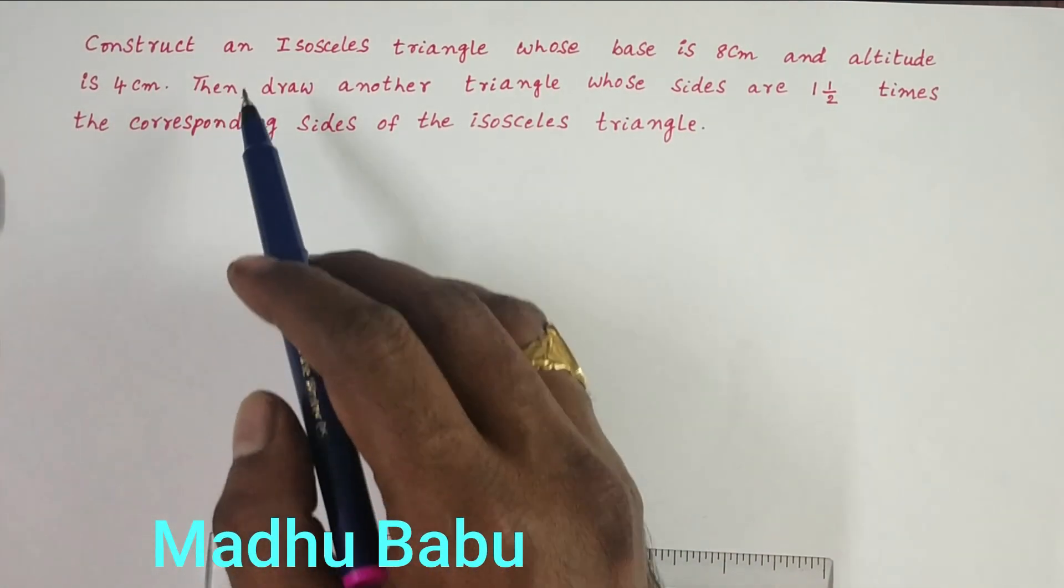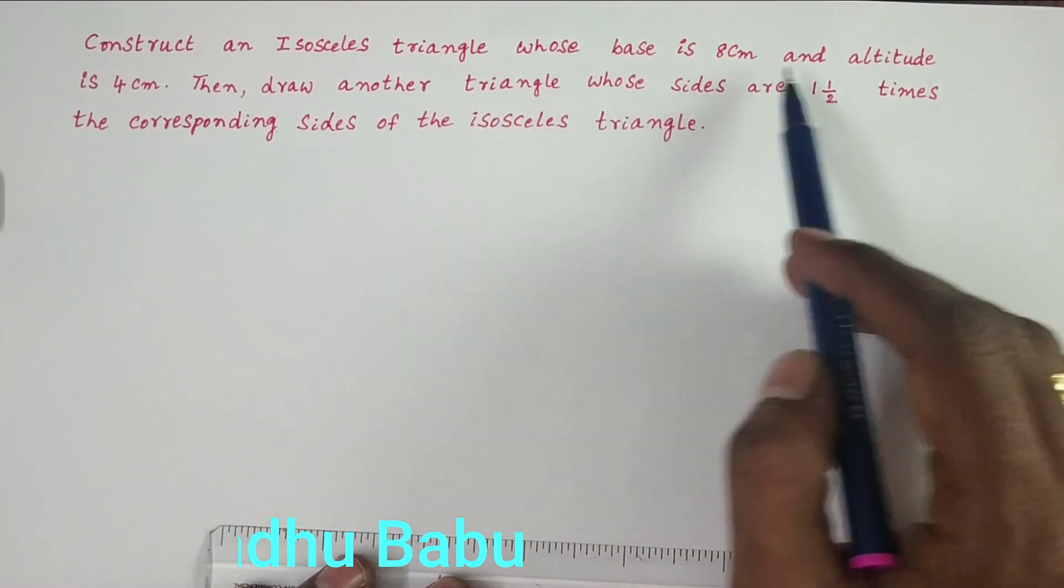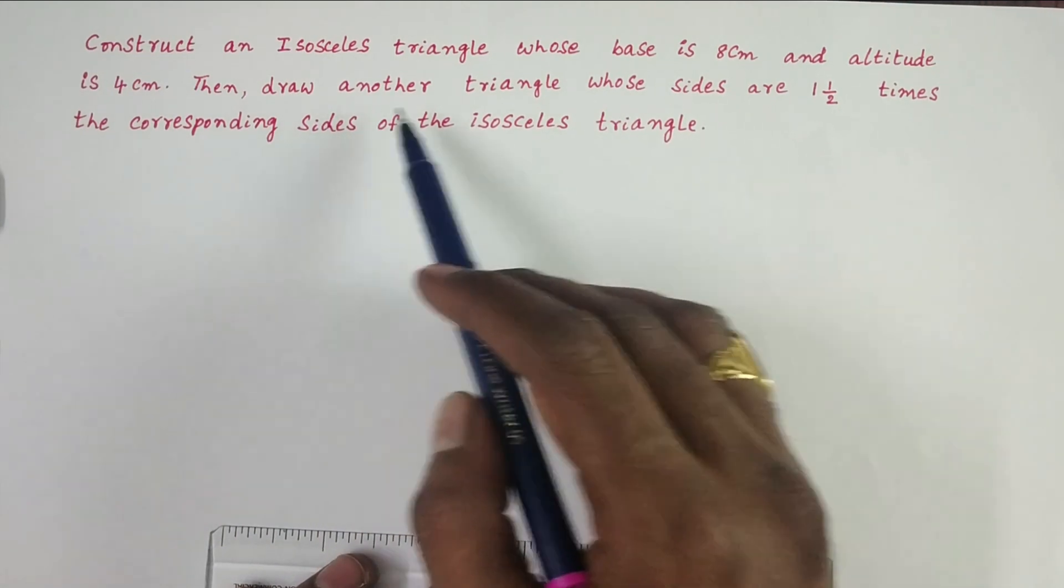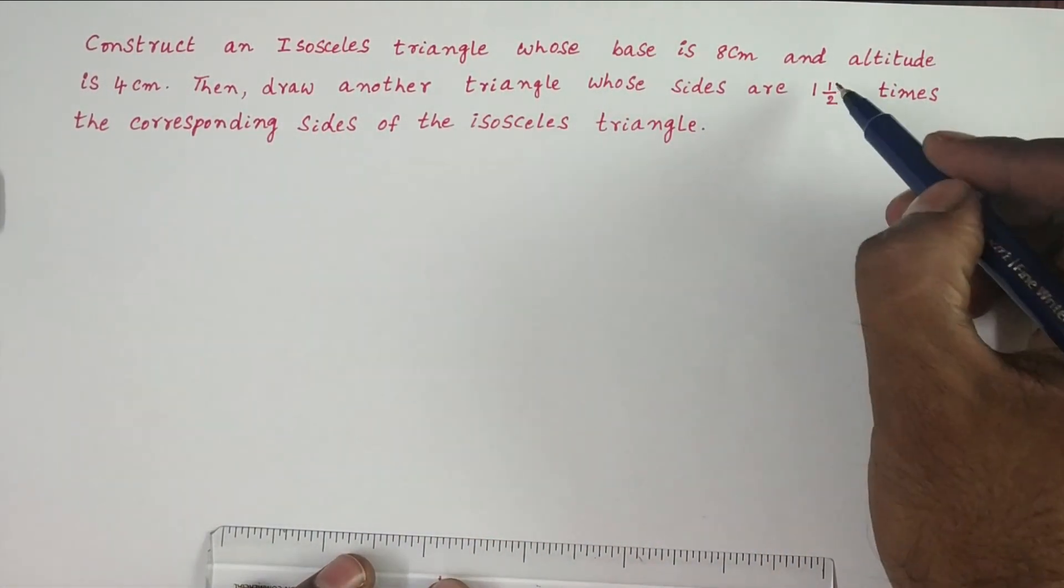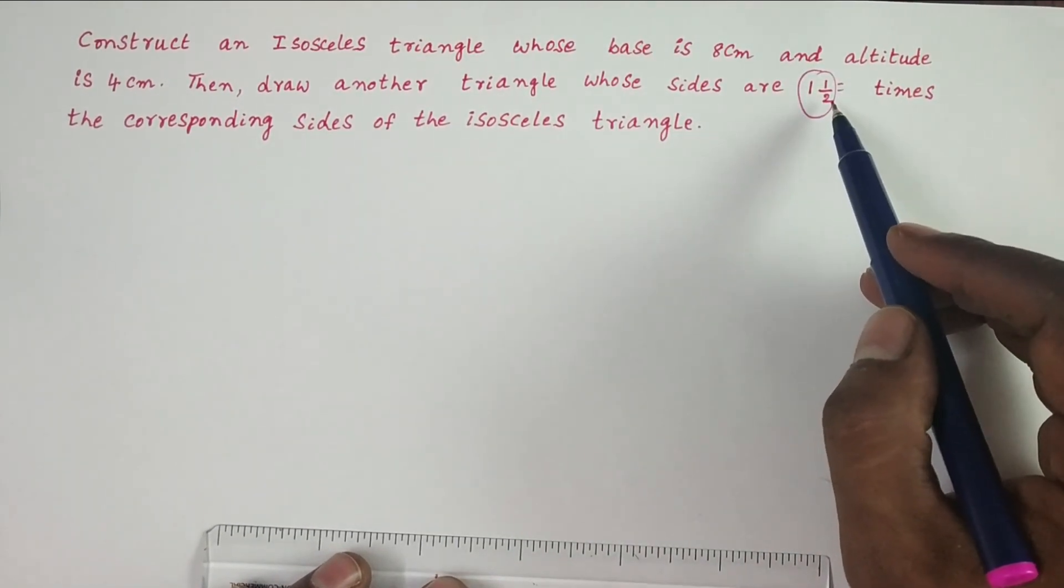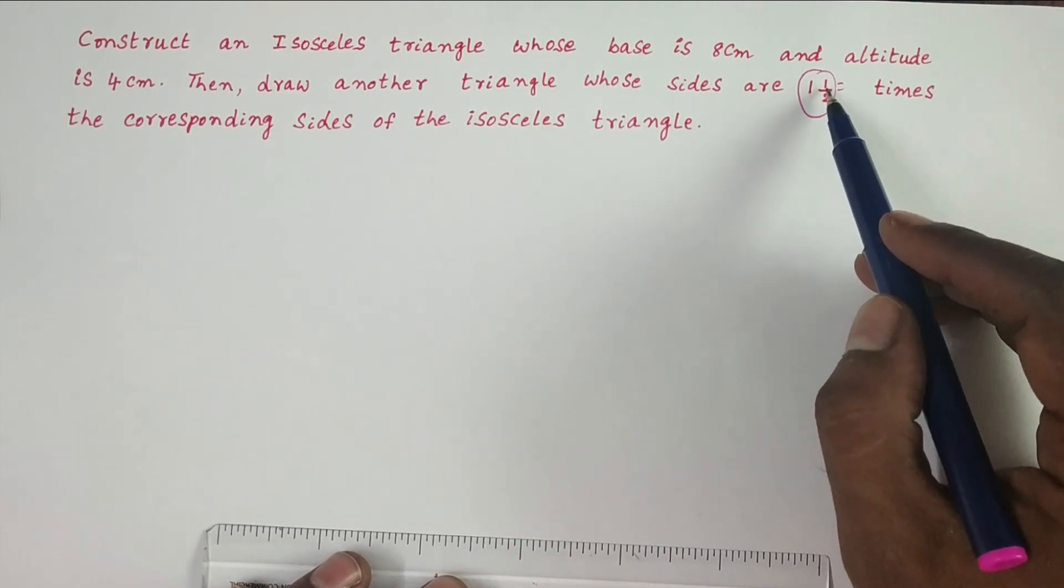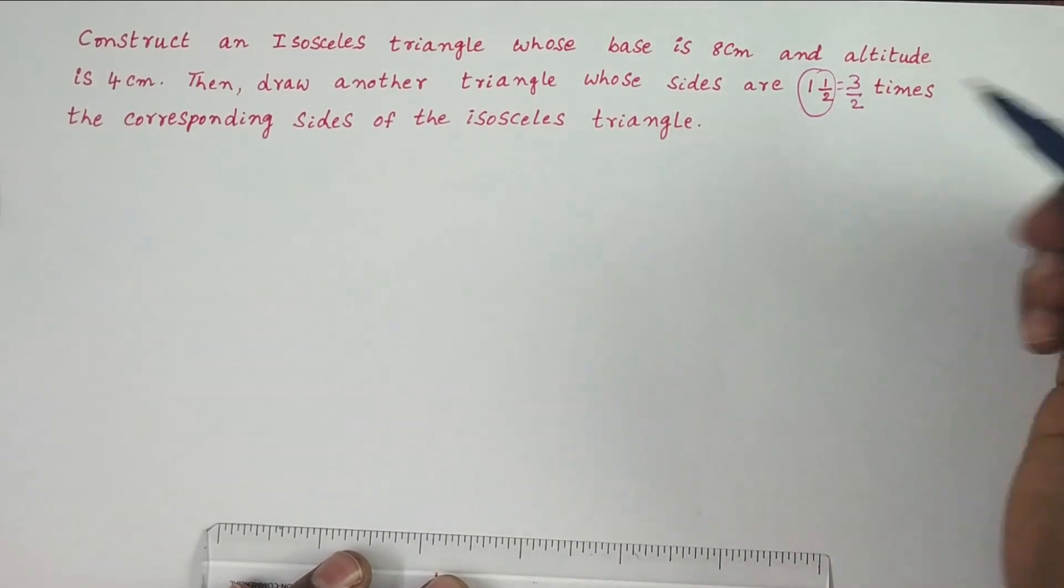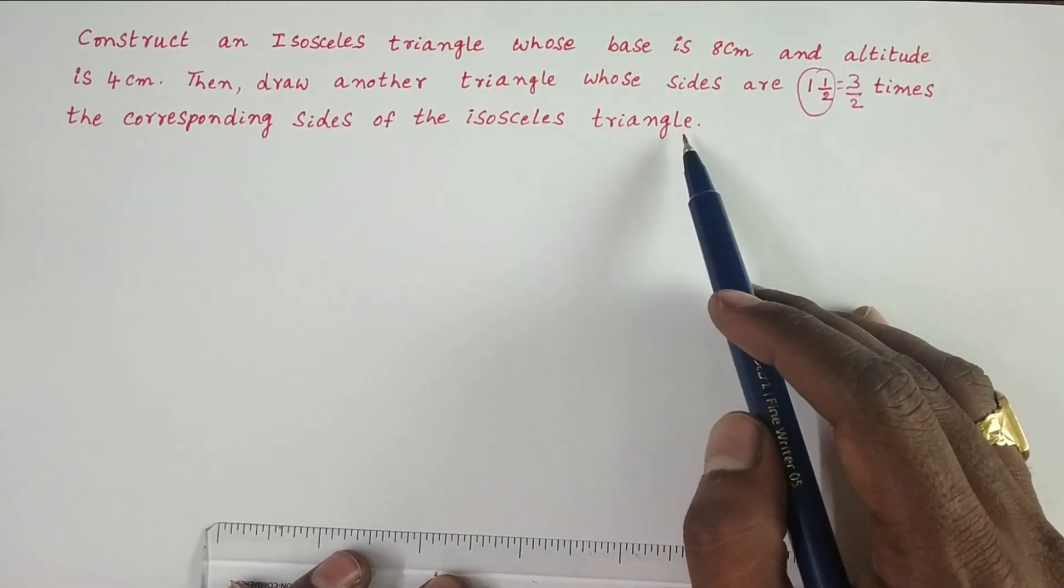The problem is to construct an isosceles triangle whose base is 8 cm and altitude is 4 cm. Then draw another triangle whose sides are 1 1/2 times the corresponding sides of the isosceles triangle. 1 1/2 is a mixed fraction, so we convert it to an improper fraction: 2 times 2 plus 1 equals 3, giving us 3/2 times the corresponding sides.